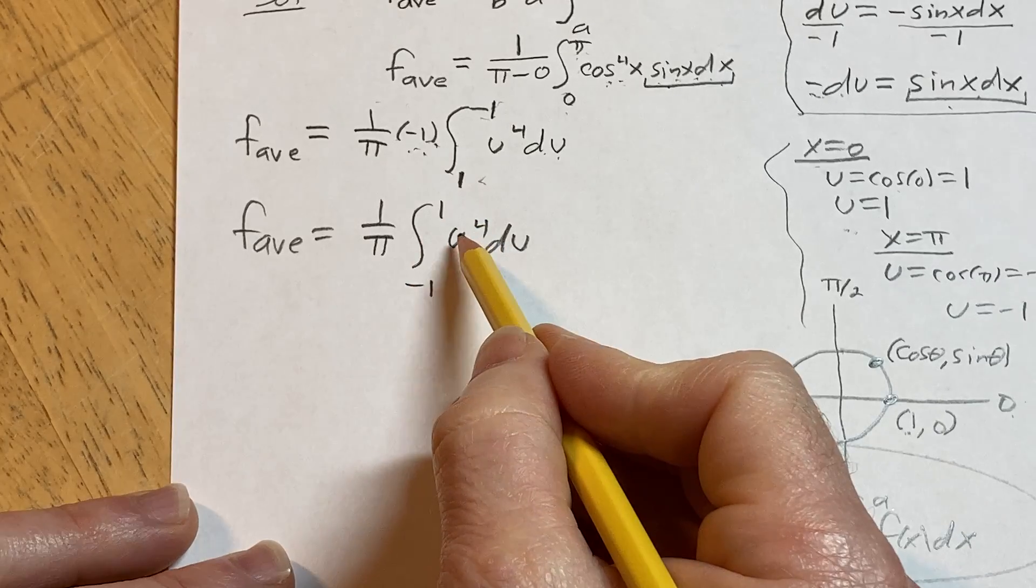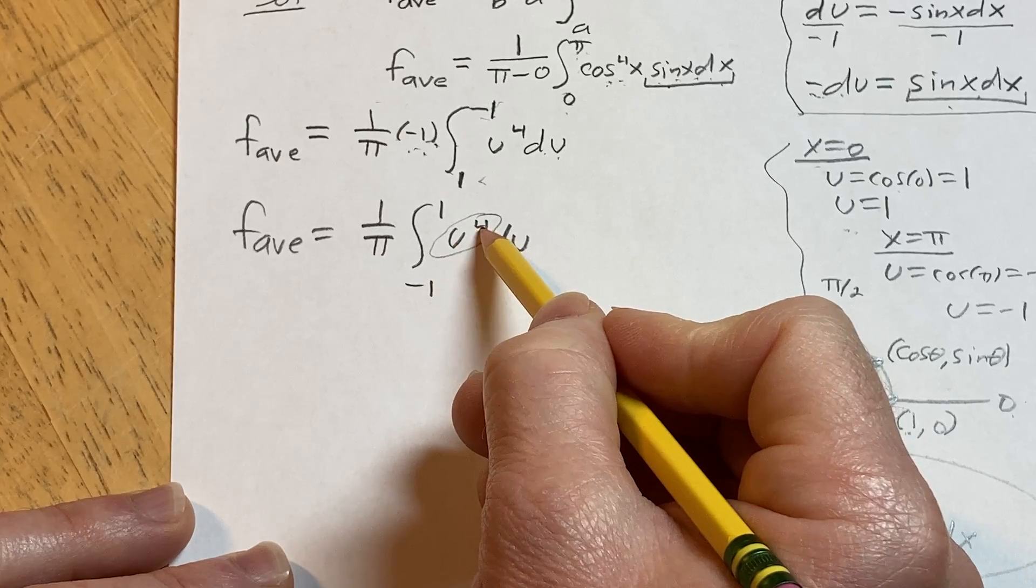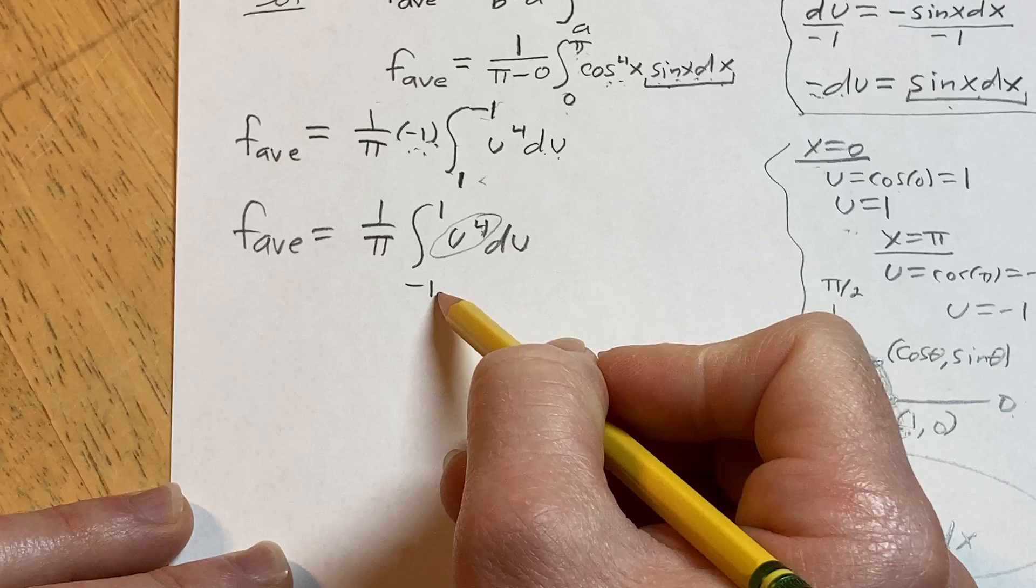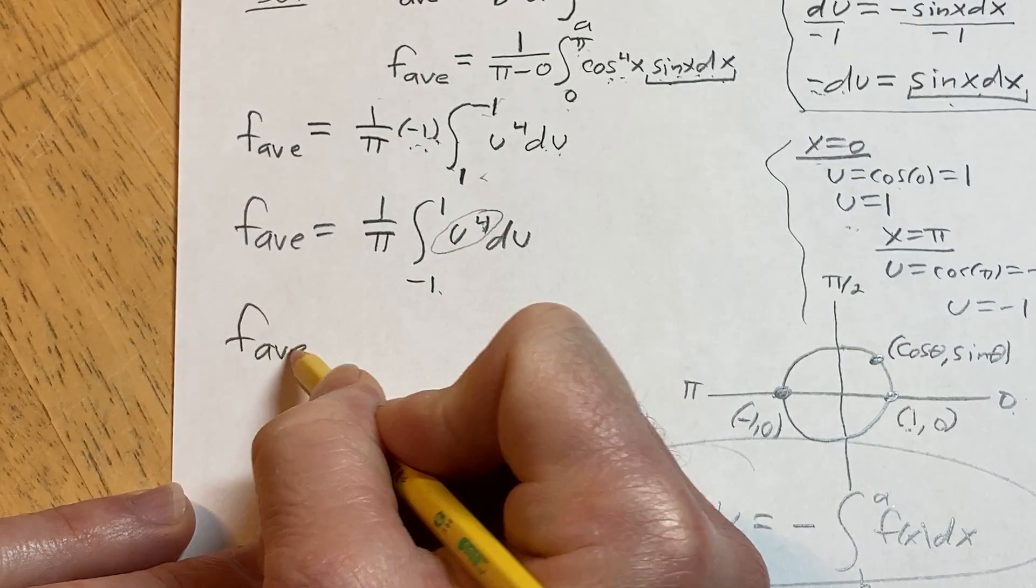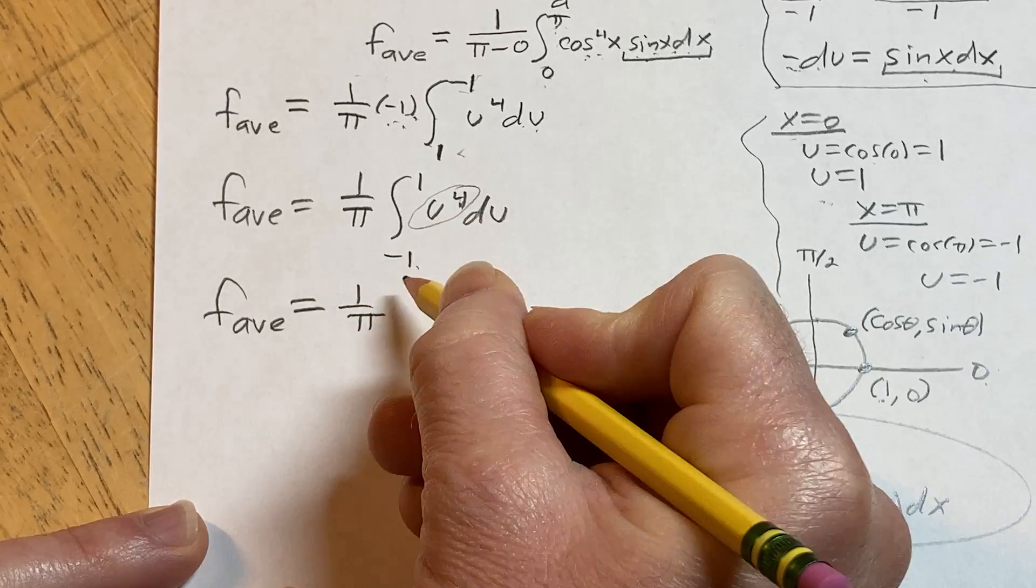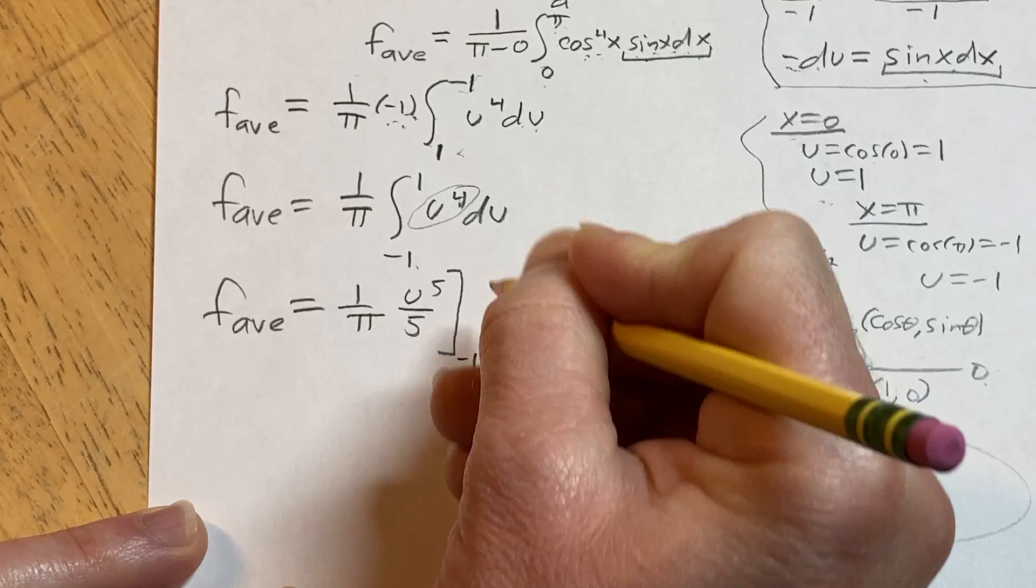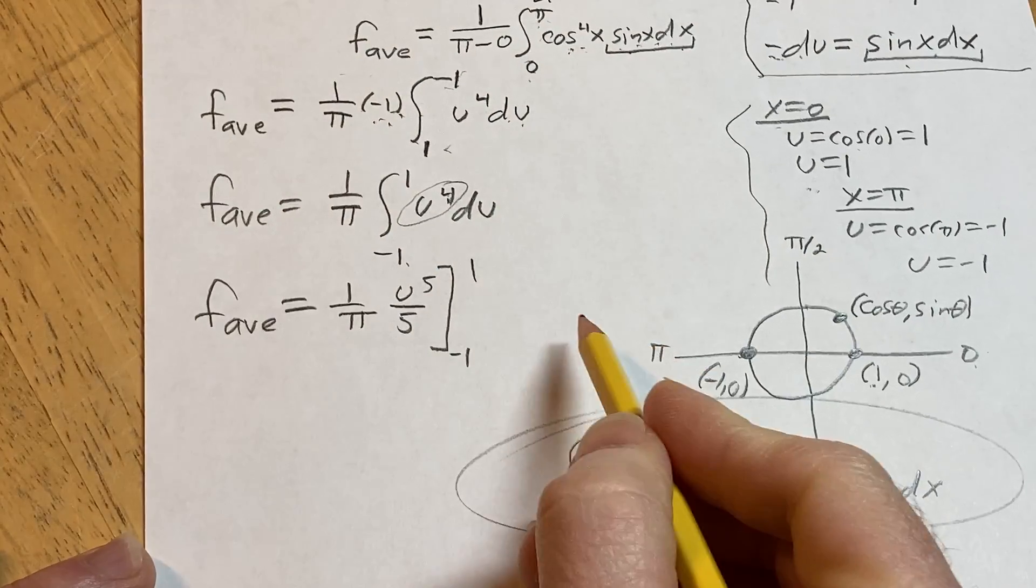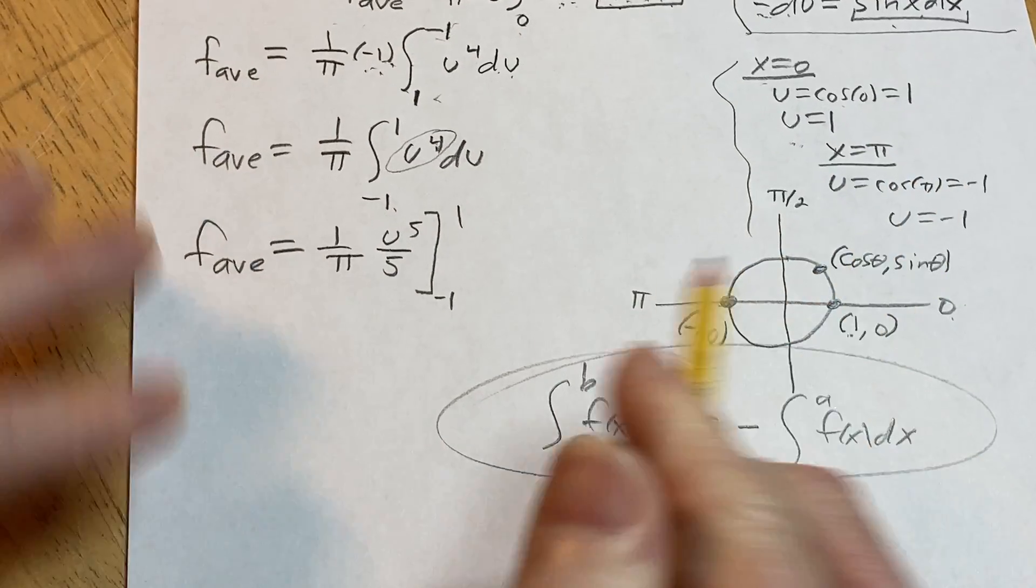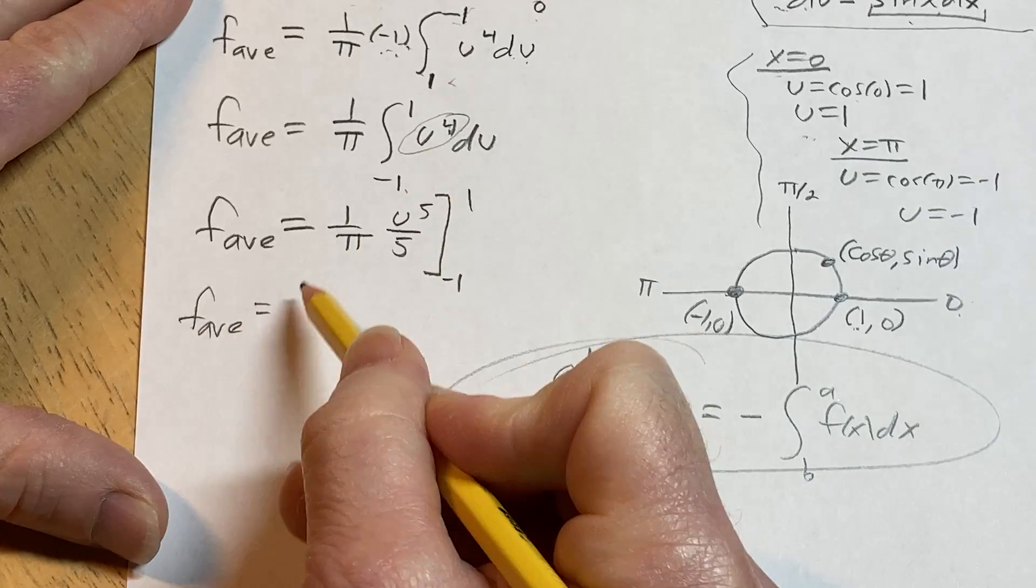Now we can integrate this. We can use something called the power rule for integration, which basically says that whenever you have something to a power, as long as that power is not negative 1, you add 1 to the exponent and then divide by that same result. So here we have the average value of a function. It's going to be 1 over pi. So here you add 1, so it'll be u to the 5 over 5. And then we're going from negative 1 to 1. You drop the integration sign, you drop the du when you get to this step. So really important to not write those things down. I feel like I'm running out of room, but I think I can squeeze it in. We'll make it work.